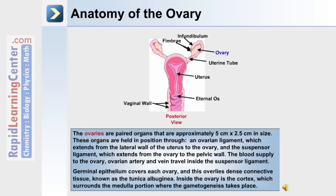The anatomy of the ovary: the ovaries are paired organs that are approximately 5 cm by 2.5 cm in size. They're held in position through an ovarian ligament, which extends from the lateral wall of the uterus to the ovary, and the suspensor ligament, which extends from the ovary to the pelvic wall. The blood supply to the ovary — the ovarian artery and vein — travel inside the suspensor ligament. Germinal epithelium covers each ovary, and this overlies dense connective tissue known as the tunica albuginea. Inside the ovary is the cortex, which surrounds the medulla portion where gametogenesis takes place.